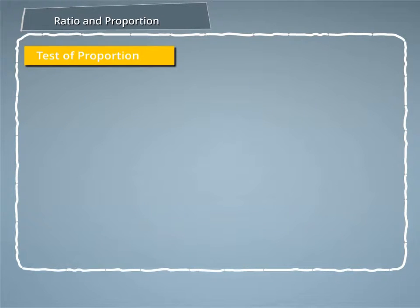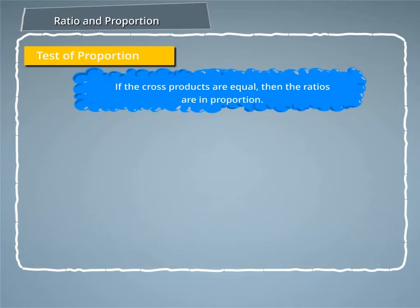Let us see how we test the proportion. We can use cross product to test a proportion. If the cross products are equal, then the ratios are in proportion.